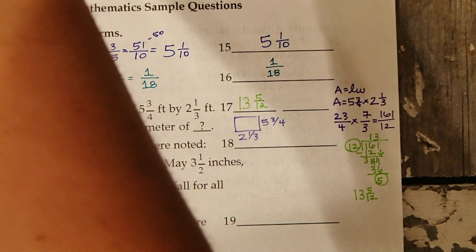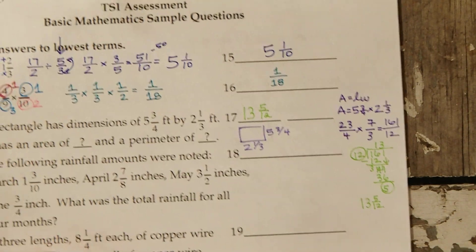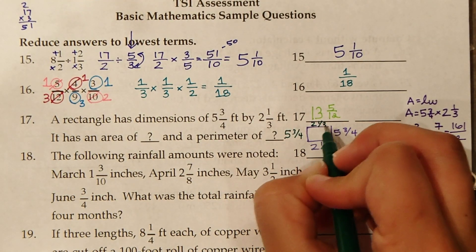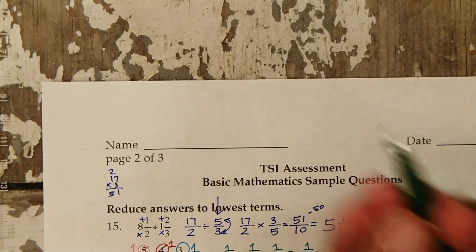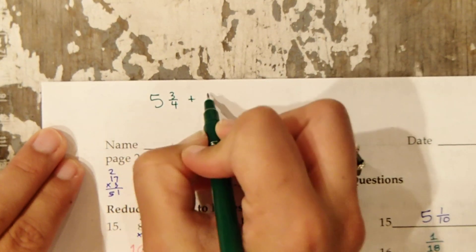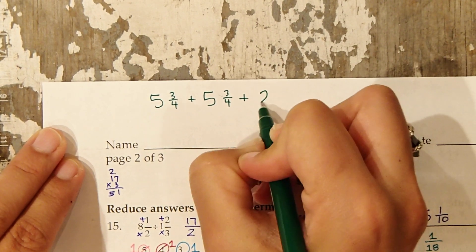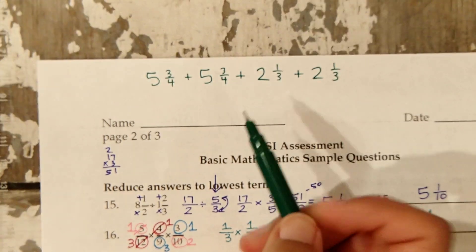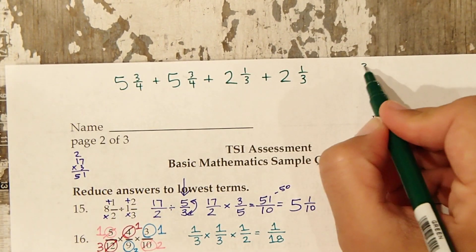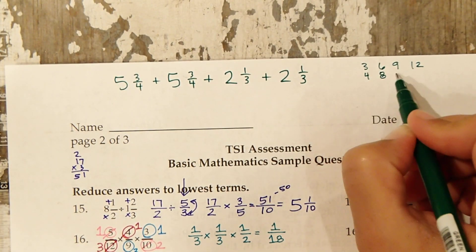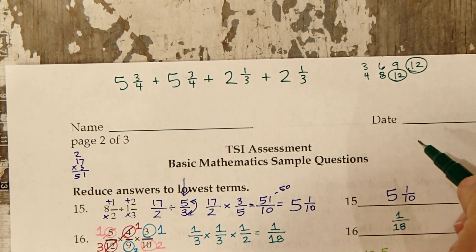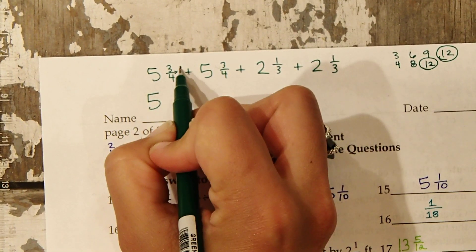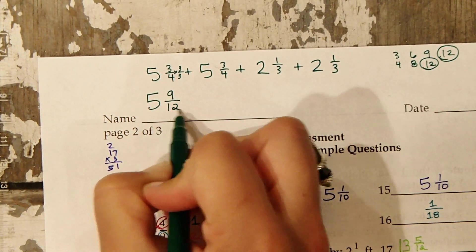Now the perimeter we're going to find by adding all the way around. We'll have 5 and 3 4ths plus 5 and 3 4ths plus 2 and 1 3rd plus 2 and 1 3rd. We've added all four sides. What is our common denominator between 4 and 3? Looking at multiples: 3, 6, 9, 12, and 4, 8, 12. So our least common multiple is 12.